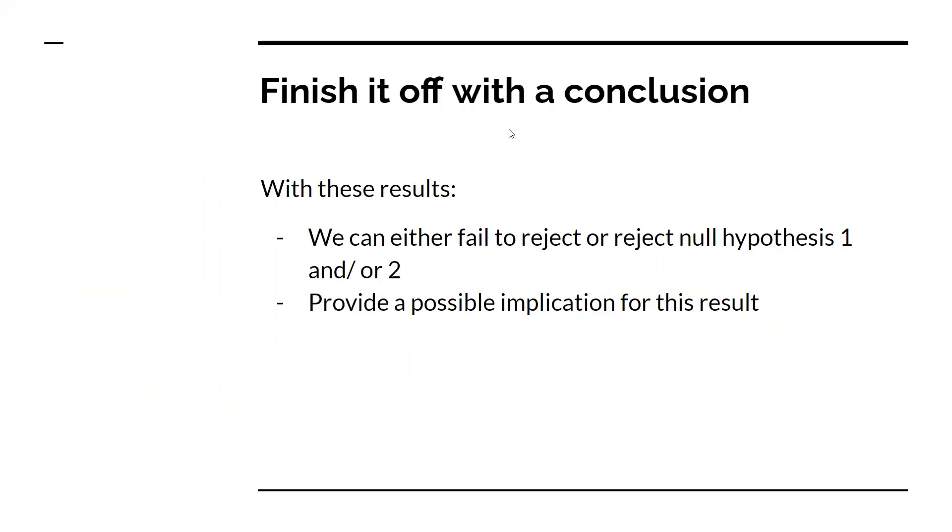To finish with a conclusion, tell them what would happen if you failed to reject or rejected null hypothesis one and/or two. Provide a possible implication for this result. That's how you get all five marks for this question.